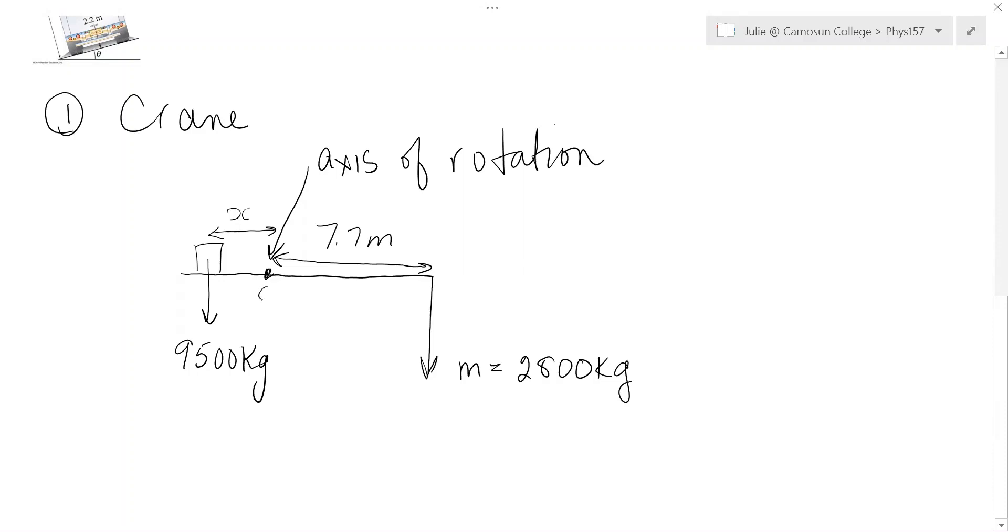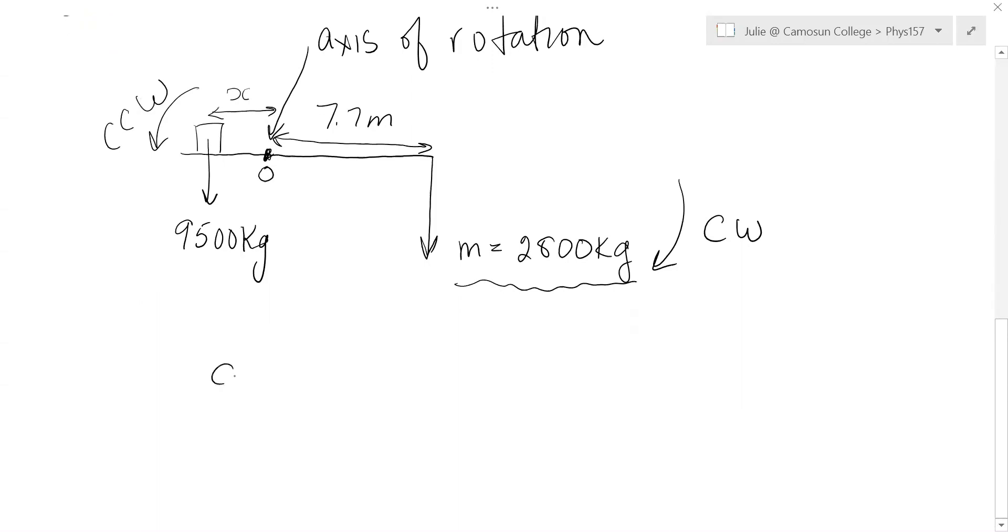Now we identify which forces create clockwise torques and which forces create counterclockwise torques. So you put your finger on the axis of rotation. Imagine what would happen if this 2800 kilogram mass were to allow that beam to rotate. Well this would clearly be a clockwise torque. So we mark that clockwise. And this, you put your finger here. This is going to be counterclockwise torques.